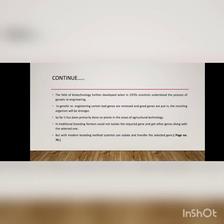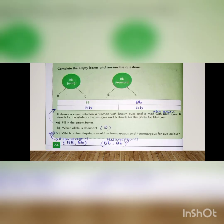Yahan tak hamara aaj ka topic khatam hua. Ab previous chapter se ek question reh gaya tha — chapter number five. Question tha: complete the empty boxes and answer the questions. Is question mein thodi confusion hai — jo sketch banaya gaya hai us ke according jo statement likhi hai woh thodi contradictory hai, isliye statement mein thodi changing karni paregi.